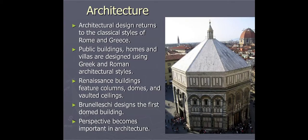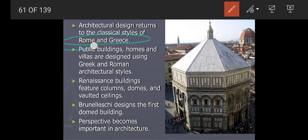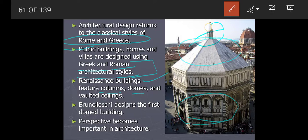In architecture, designs returned to the classical style of Rome and Greece. Public buildings, homes, and villas were designed using the Greek and Roman architectural style. The Renaissance building features columns, domes, and vaulted ceilings. Brunelleschi designed the first dome building. Perspective became important in architecture, and architects started taking proper angles to make their buildings.